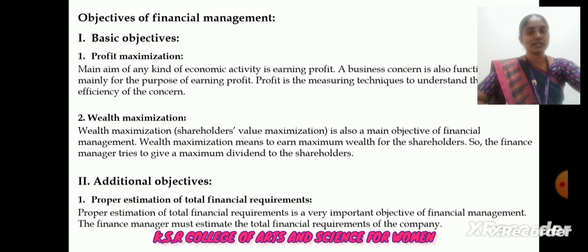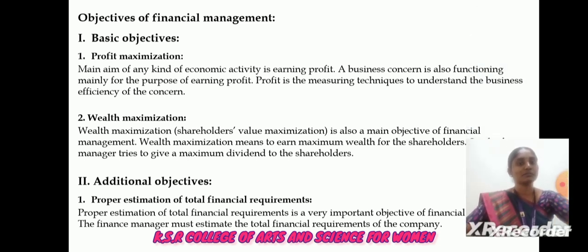Next is the objectives of financial management. There are two objectives — first, basic objectives, and second, additional objectives. The first basic objective is profit maximization. The main aim of any kind of business is earning profit, and profit is a measuring technique to understand the business efficiency of the concern. The second basic objective is wealth maximization — shareholders' wealth maximization is also a main objective of financial management. Wealth maximization means earning maximum wealth for the shareholders, and the manager tries to give maximum dividend to the shareholders.